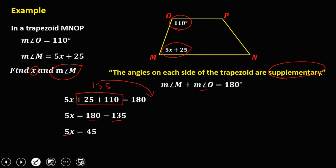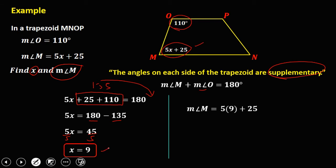Dividing both sides by 5, x is equal to 9. To solve for the measure of angle M: 5x + 25 = 5(9) + 25 = 45 + 25, so angle M is equal to 70 degrees.